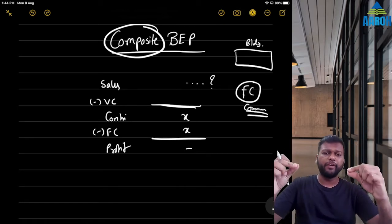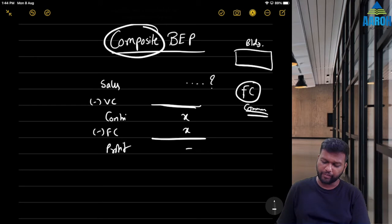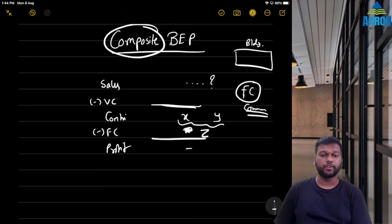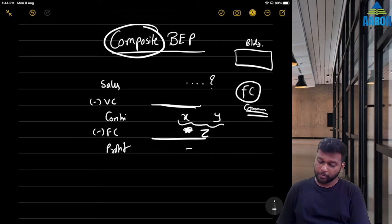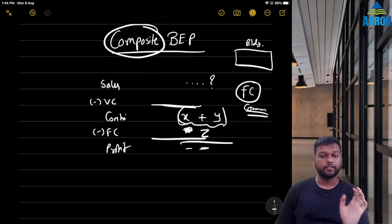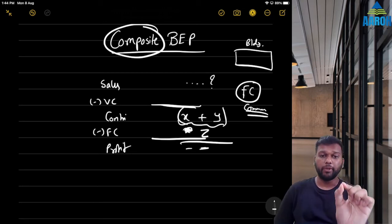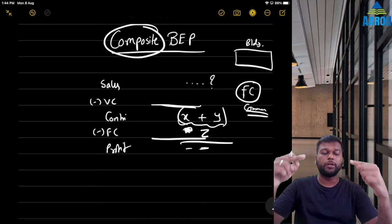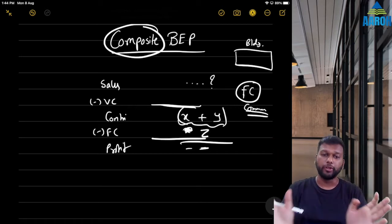So we treat it as one common fixed cost. Contribution will be different — contribution of pen is X, contribution of pencil is Y — but fixed cost Z is common for both. We have to decide what X plus Y should be so that net profit is still zero. That is composite BEP: the individual break-even point of multiple products produced together.